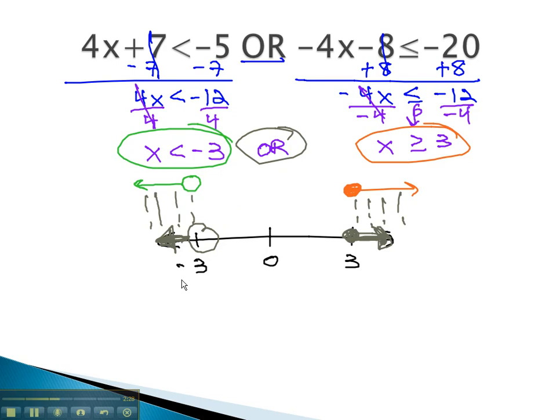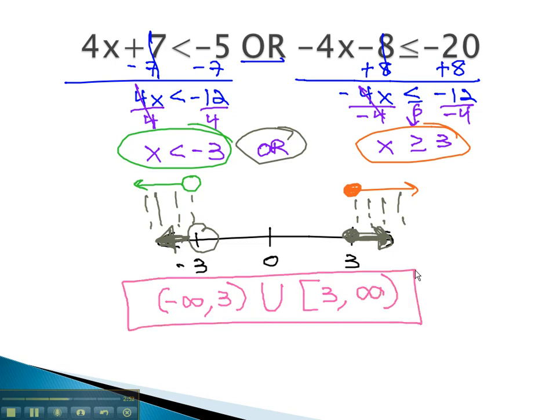In interval notation, the graph starts at the left, smallest value, negative infinity up to 3. Infinity is always curved, and 3 is curved because it's not equal to. Then, to show it's a second part, we use the union symbol, or the horseshoe. The graph starts again with a closed bracket at 3, a square bracket, all the way up to infinity, which is always curved. And this is our interval notation.